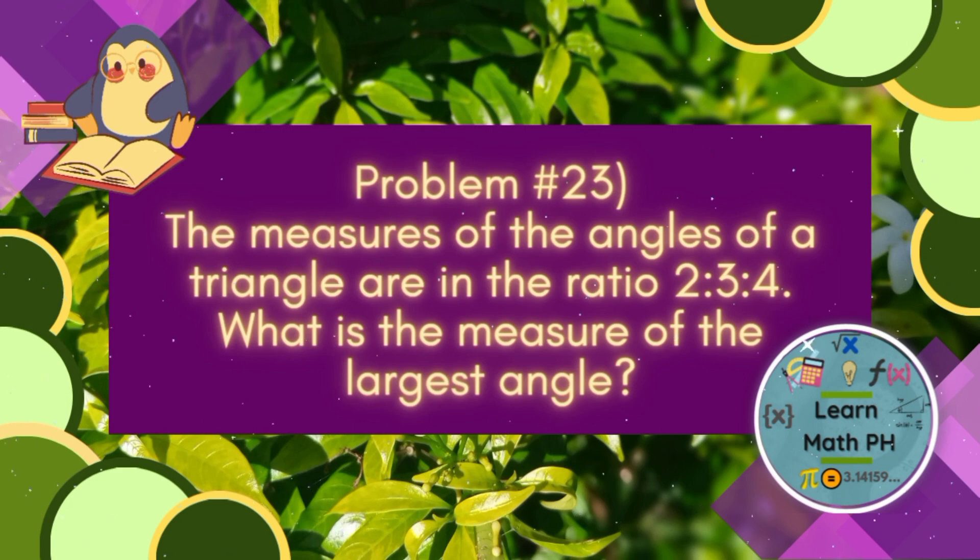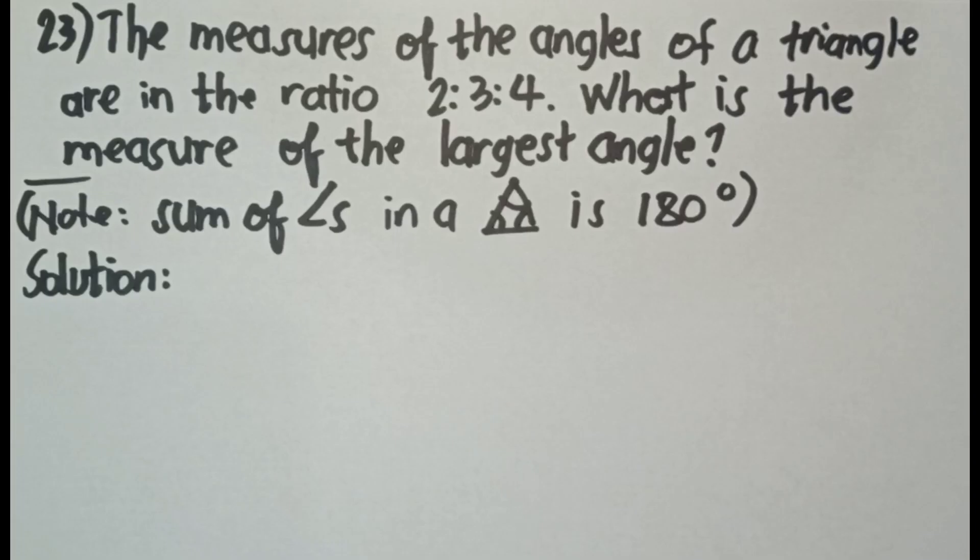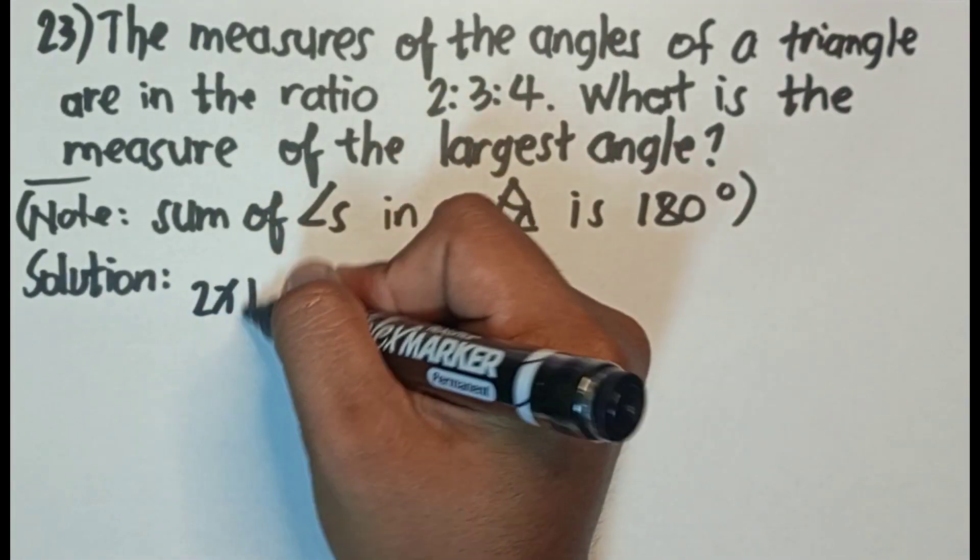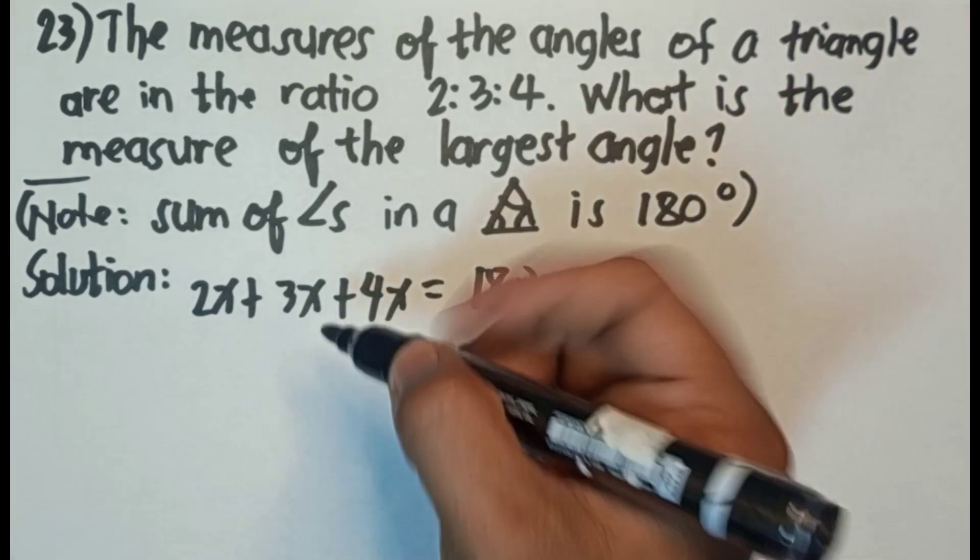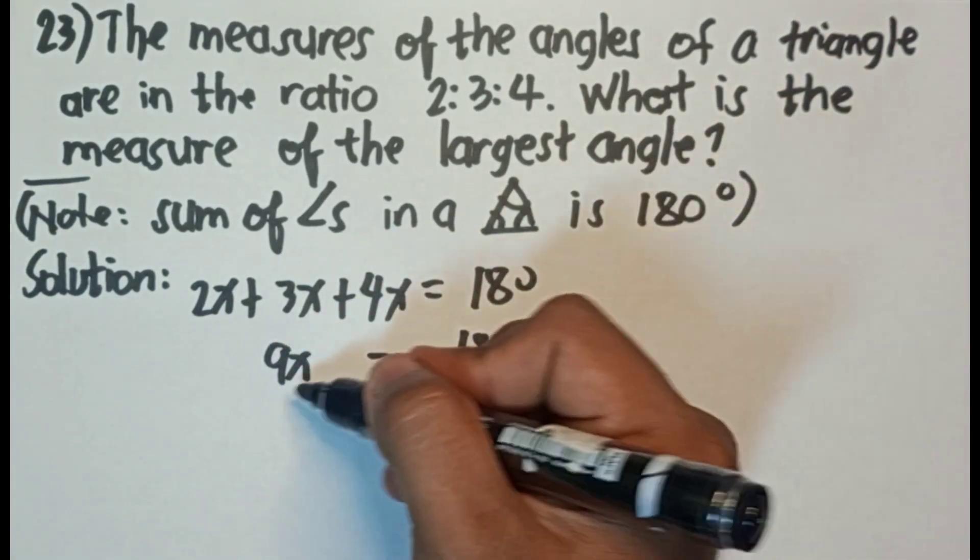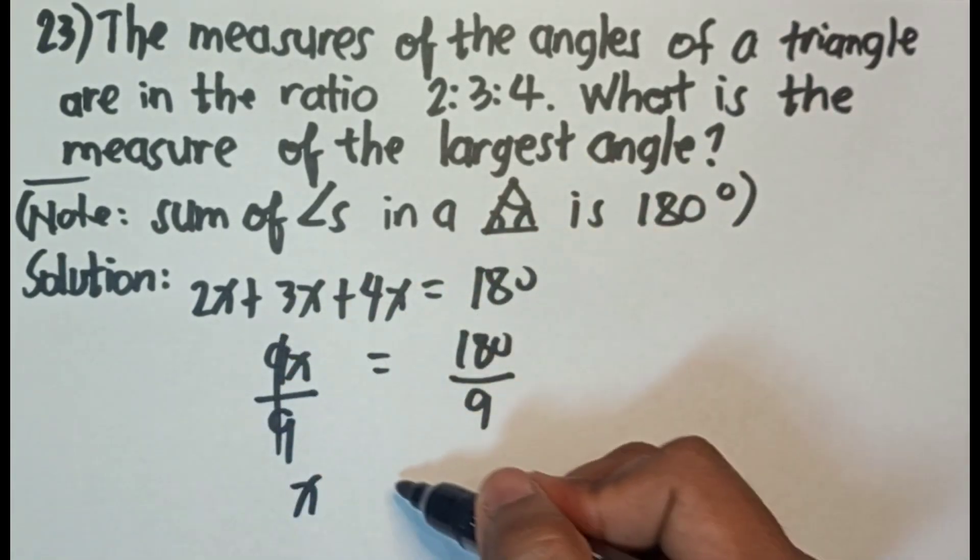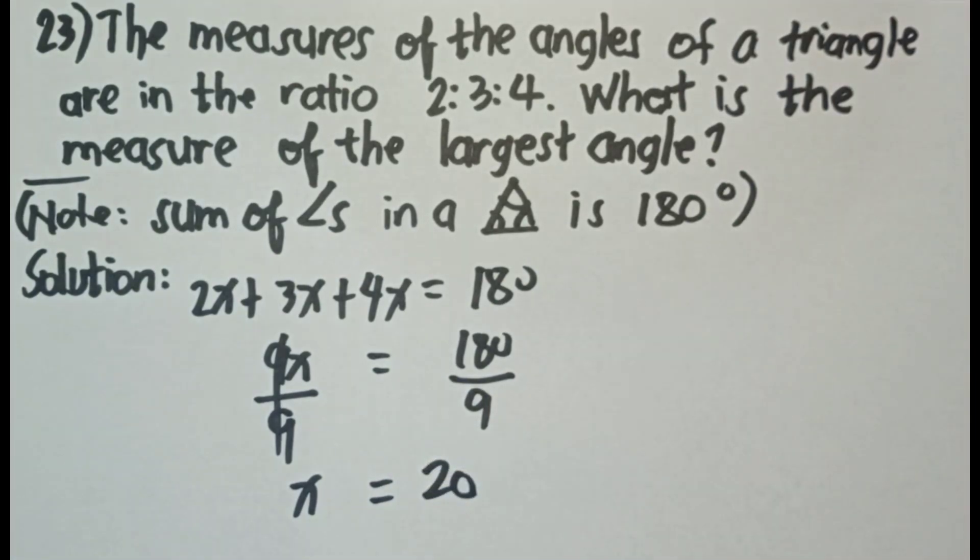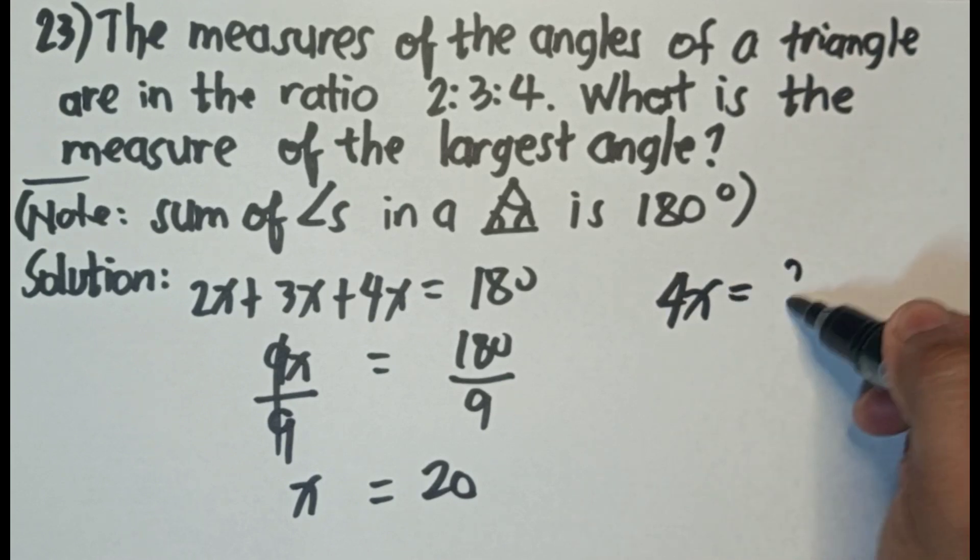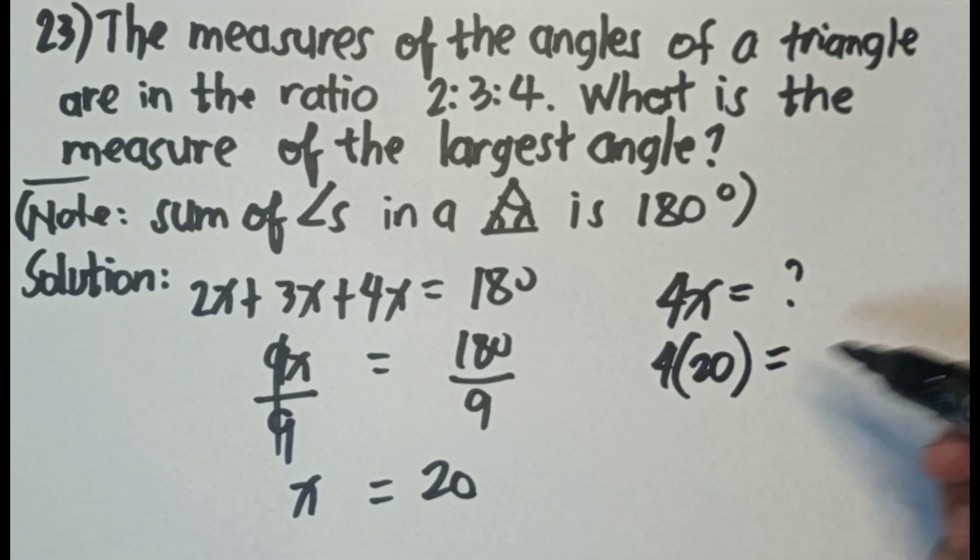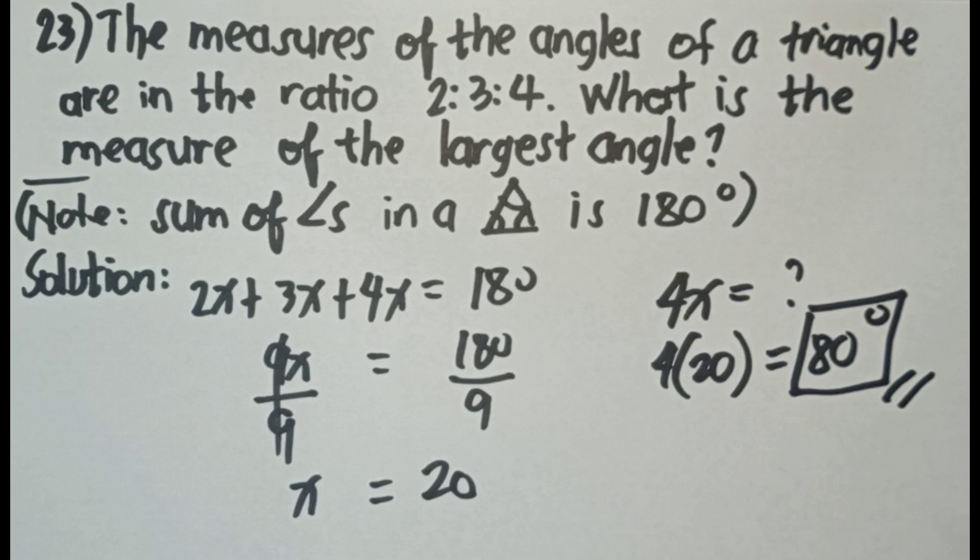Dito tayo ngayon sa problem number 23. The measures of the angles of a triangle are in the ratio 2 is to 3 is to 4. What is the measure of the largest angle? Ang alam natin na sum of angles in a triangle is 180 degrees. So ang gagawin natin solution: 2x plus 3x plus 4x equals 180. 2 plus 3, 5 plus 4, 9. So 9x equals 180. Divide both sides by 9. X equals 180 divided by 9 is 20. So ito yung pinaka parang base niya. Itatimes nyo natin sya sa 4. 4x kasi largest ang tinatanong. 4 times 20 equals 80. The final answer is 80 degrees. Ito yung angle ng pinaka malaking angle sa triangle, 80 degrees.